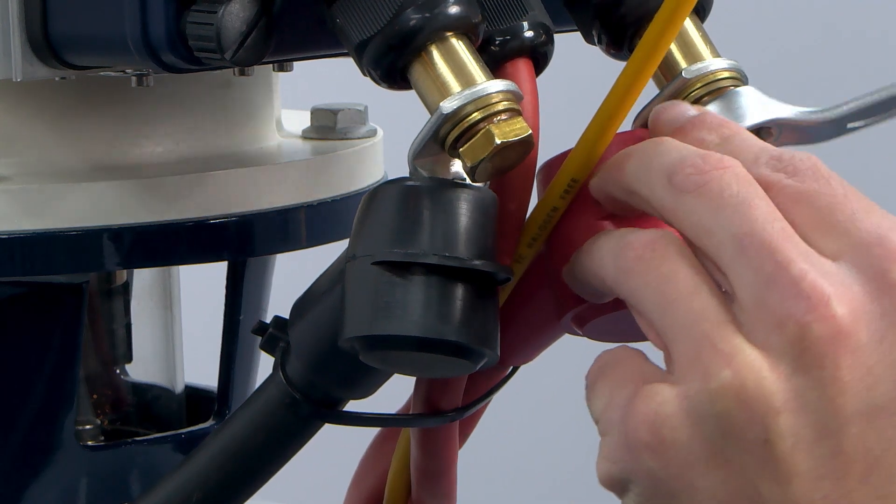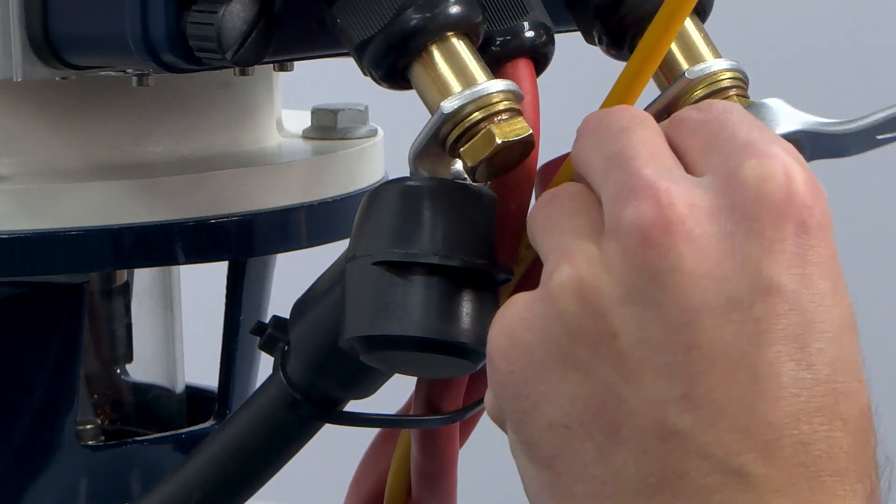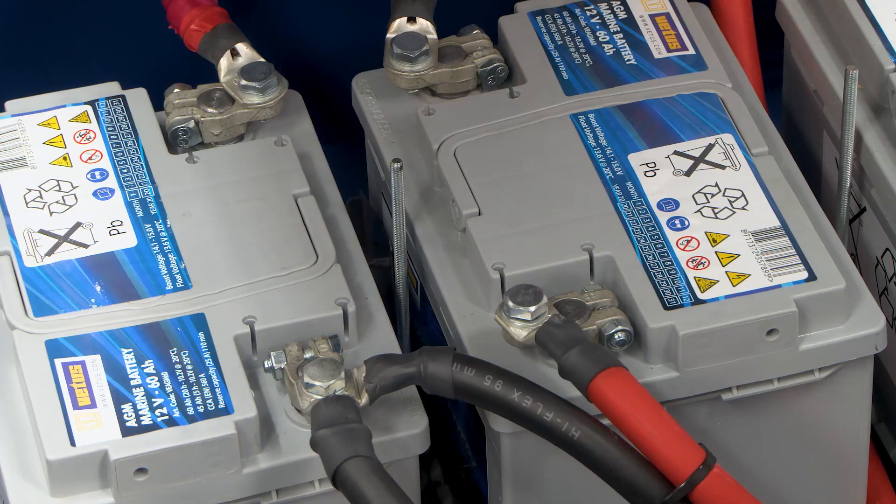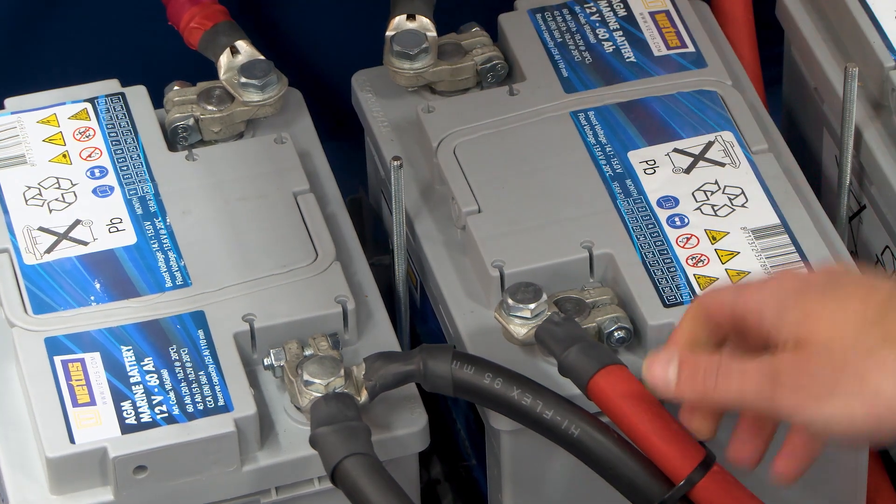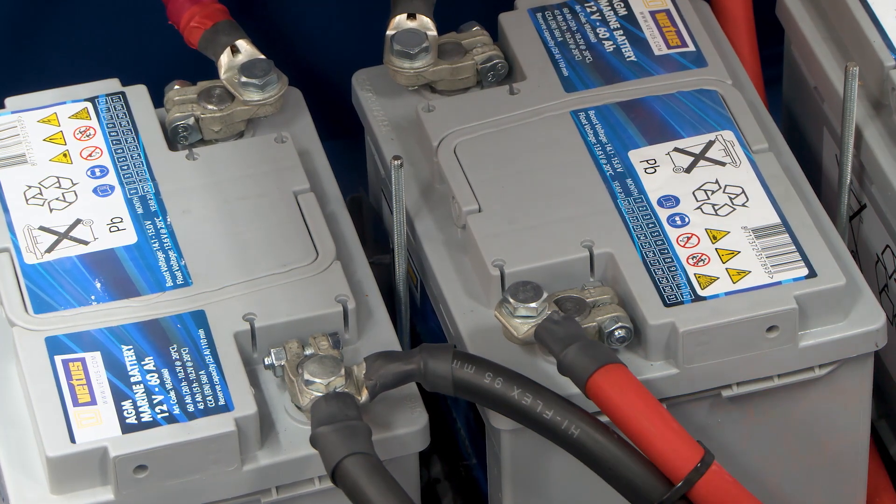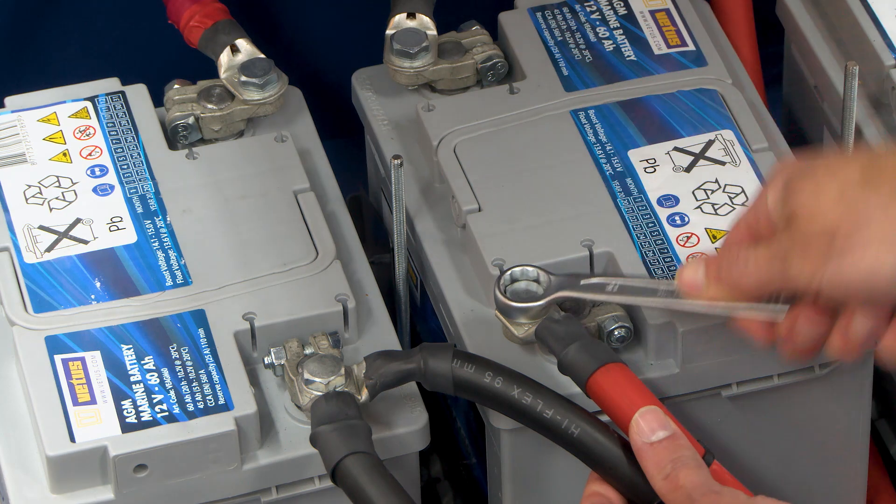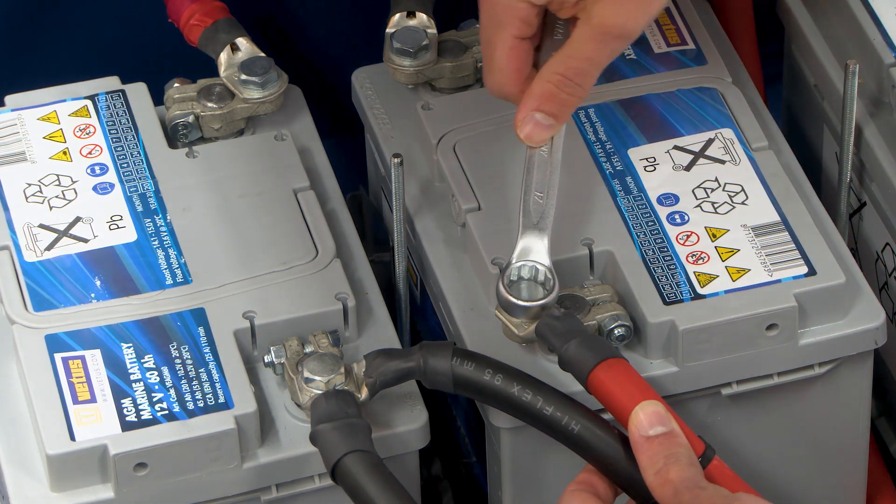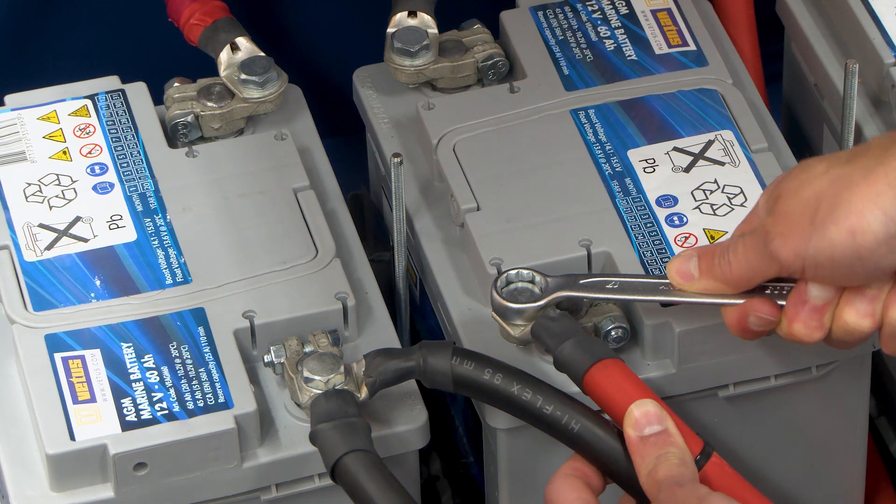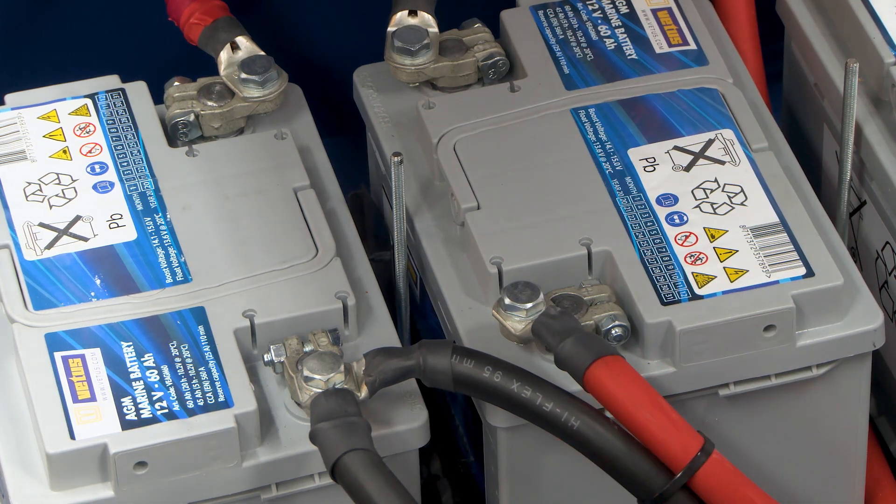If your values under load are not within the range recommended by Vetus, ensure all your components are properly installed, tightened, and free from defects. Any of these components can impact the power quality. Remember, the length and quality of your cables can lead to voltage drops. Ensure they meet our specifications for optimal performance.